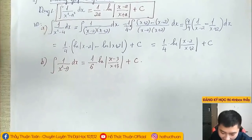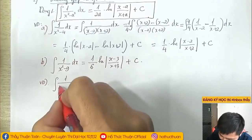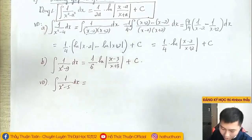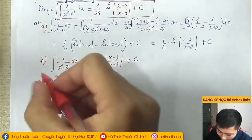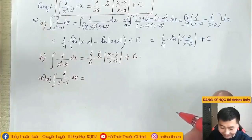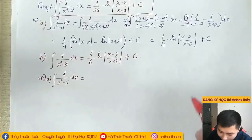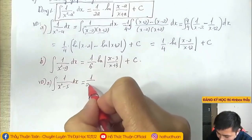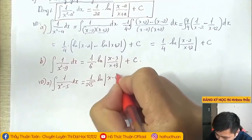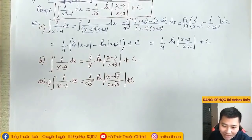Ví dụ biến tướng thứ nhất: nguyên hàm của 1/(x²-5) dx. Các bạn bảo A bằng 5 là sai. A của chúng ta phải bằng √5 vì x²-5 = x²-(√5)². Vậy bằng (1/(2√5)) nhân ln|(x-√5)/(x+√5)| cộng C. Quan trọng nhất là xác định đúng A để ốp công thức cho chuẩn.